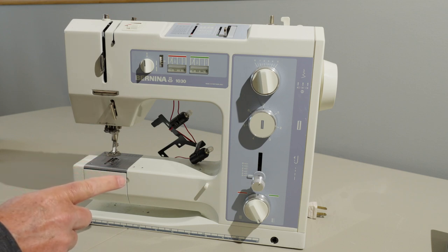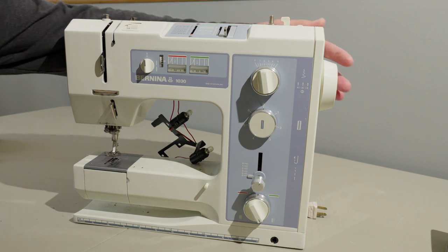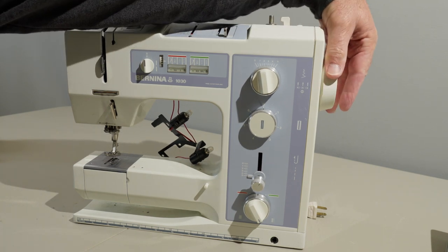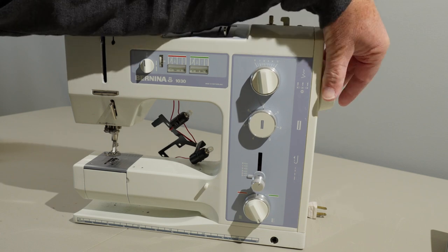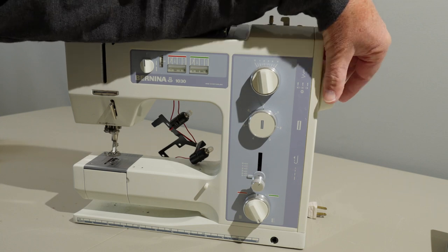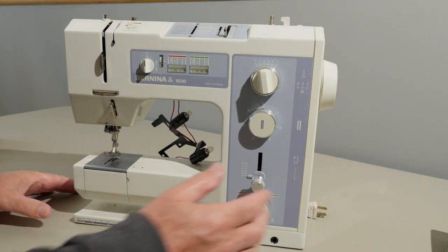This nice Bernina 1030 has a problem. Let me show you what it is. When you go to turn the hand wheel, it goes like three quarters of the way around or half the way around and then it jams. Now I've taken the covers off and let me show you what's going on here in the back.